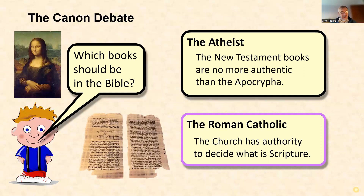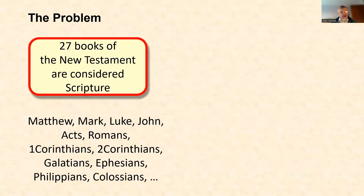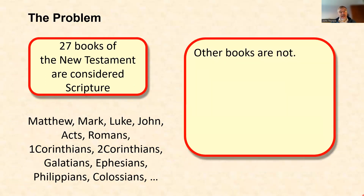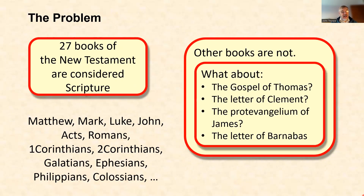Those are the two issues that come out of this idea of the canon. We have our 27 books of the New Testament which we consider scripture, but there are other books about Jesus which we wouldn't consider scripture. What about the Gospel of Thomas? What about the first letter written by Clement of Rome, written around 96 to 98 AD, or the Infancy Gospel of James, or the Epistle of Barnabas from the early second century?